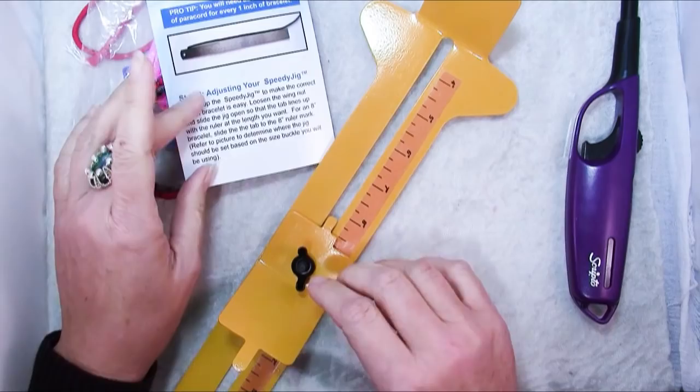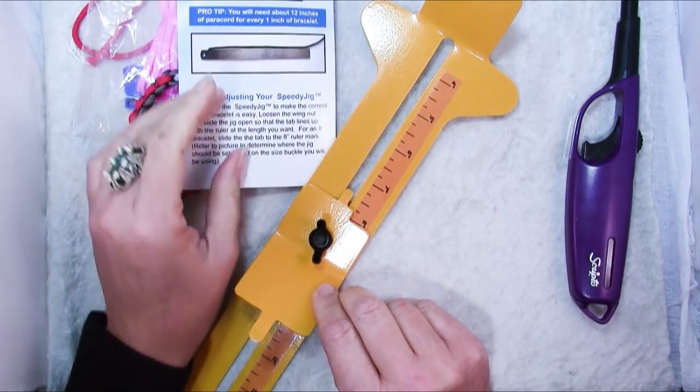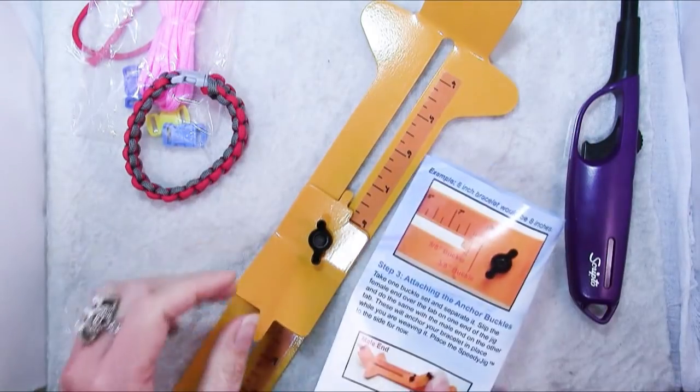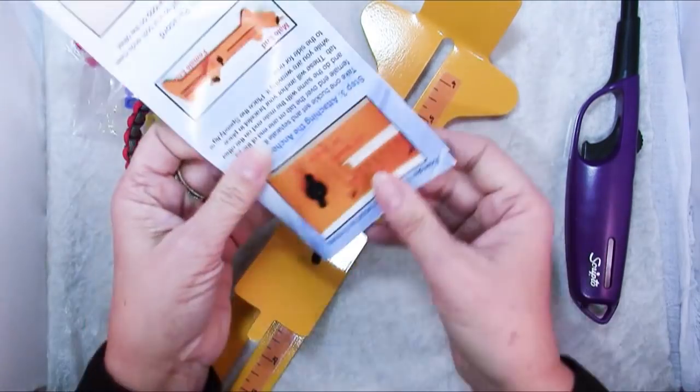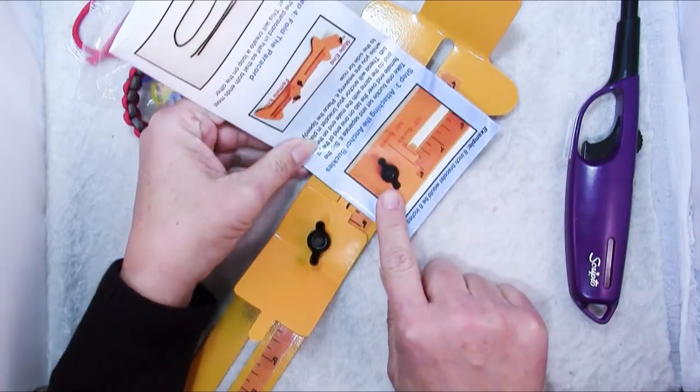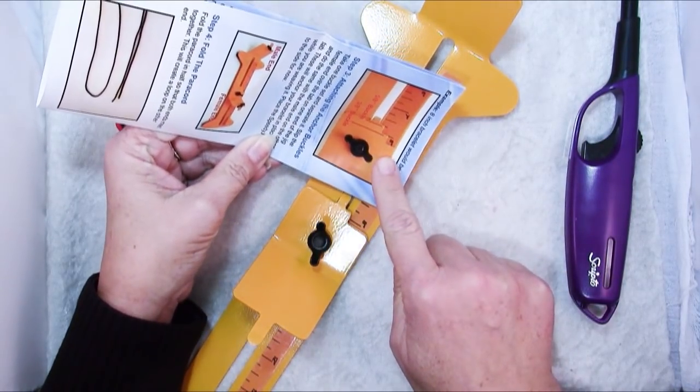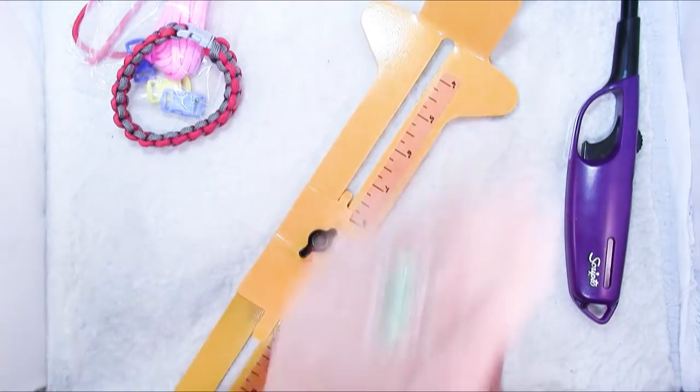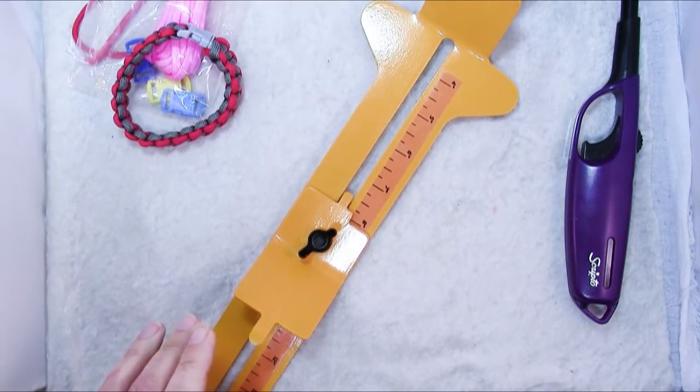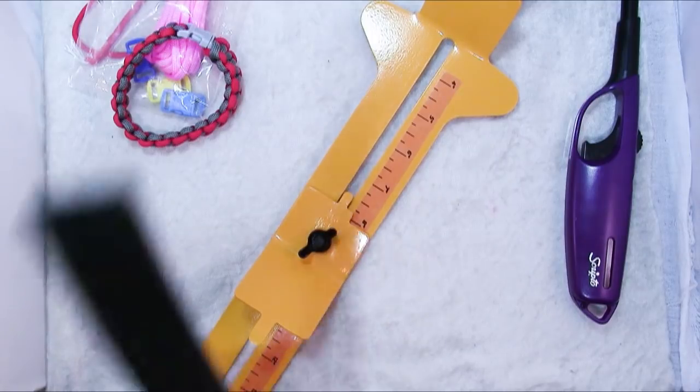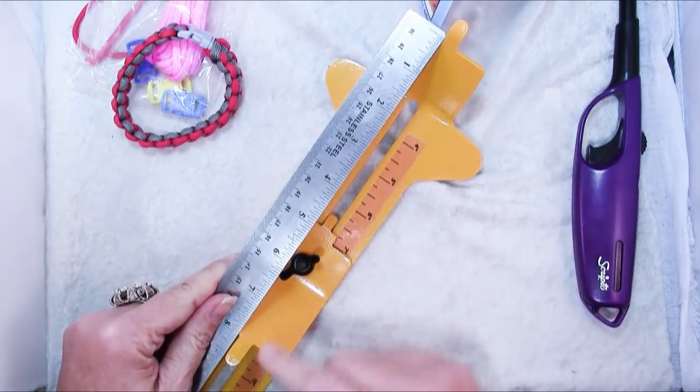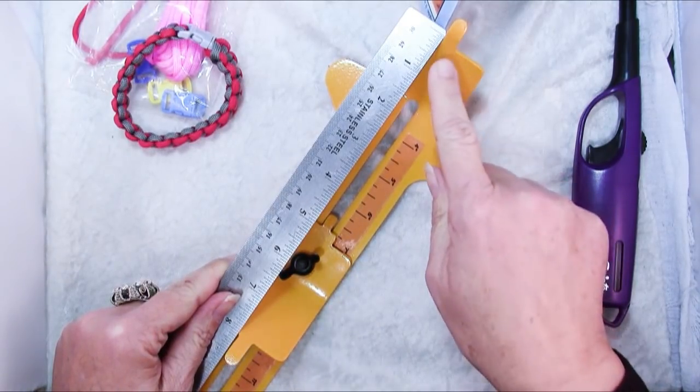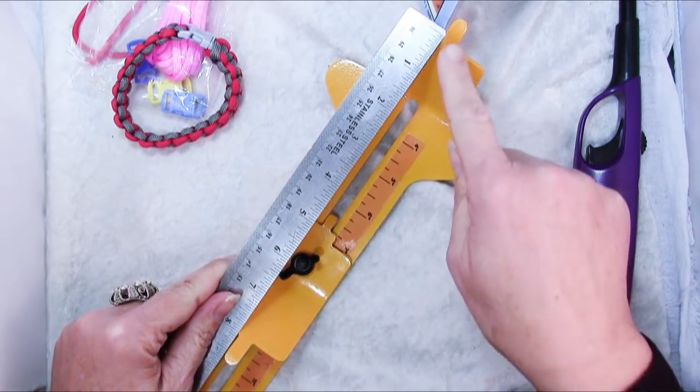So it says for an eight-inch bracelet, slide the tab to the eight-inch ruler mark. I was a little confused by this because their picture looks different from mine—theirs has an extra bump—so I wasn't quite sure where to put it. And if that happens to you, a better thing to do is to measure from here to here, and once you get your bracelet on there with the clasps you'll see better where you need to measure.